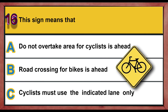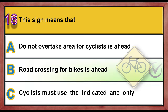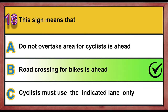Question 16. This sign means that: A. Do not overtake — the area for cyclists is ahead. B. Road crossing for bikes is ahead. C. Cyclists must use the indicated lane only. Correct answer is B: Road crossing for bikes is ahead.